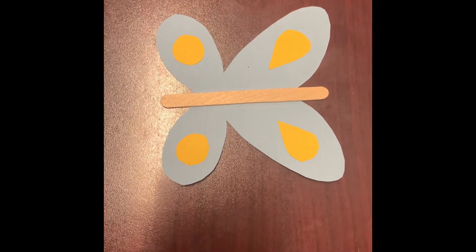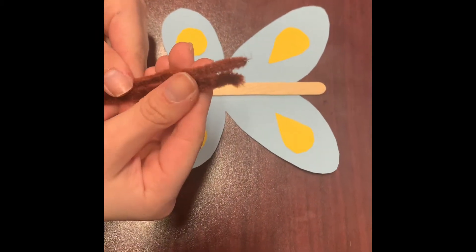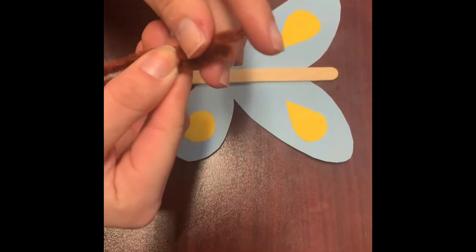After you glue the popsicle stick, you're going to need both of these and you're going to cut them about this much. So cut them right now.